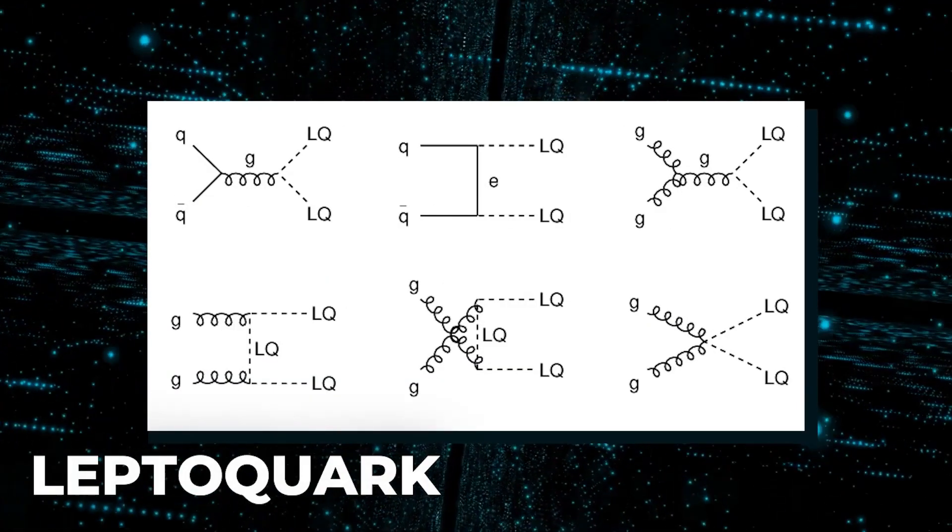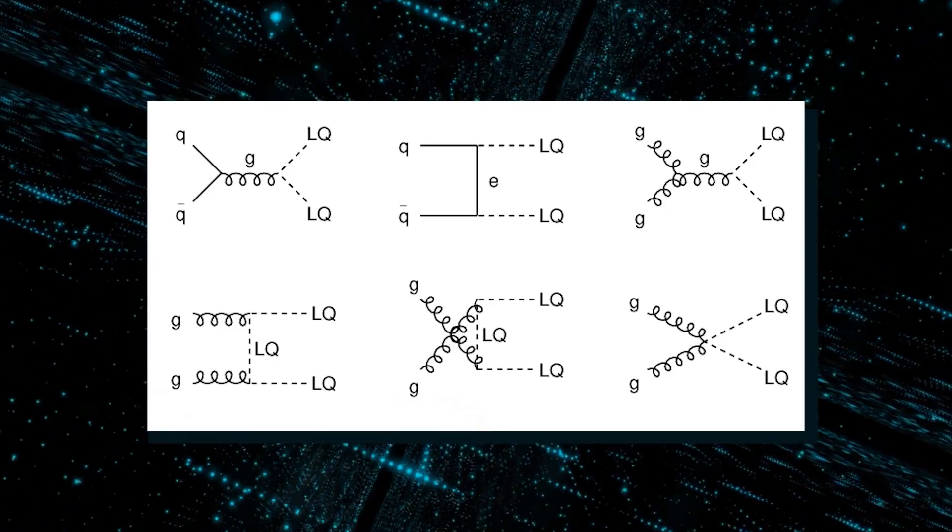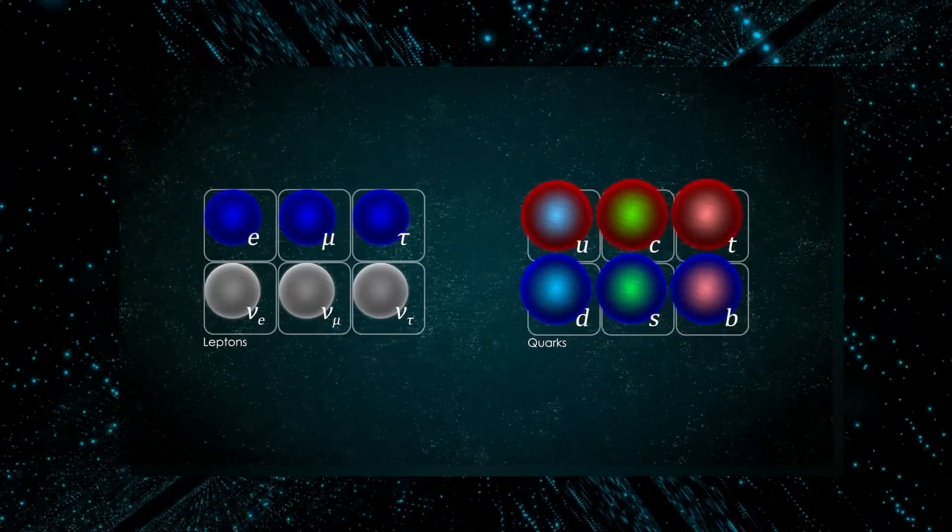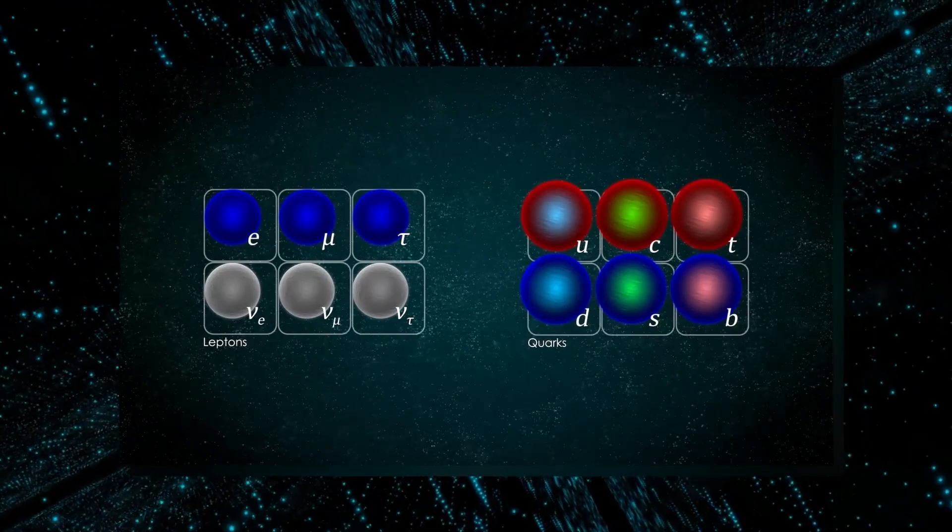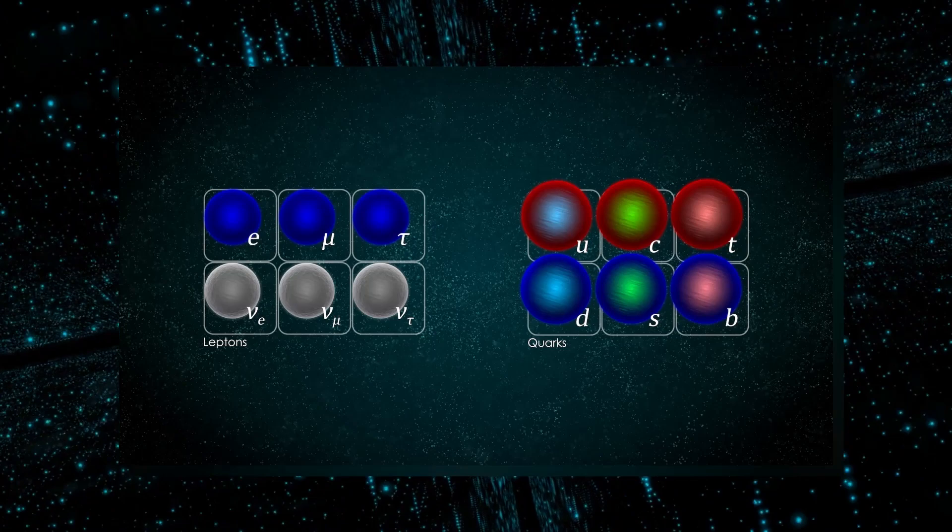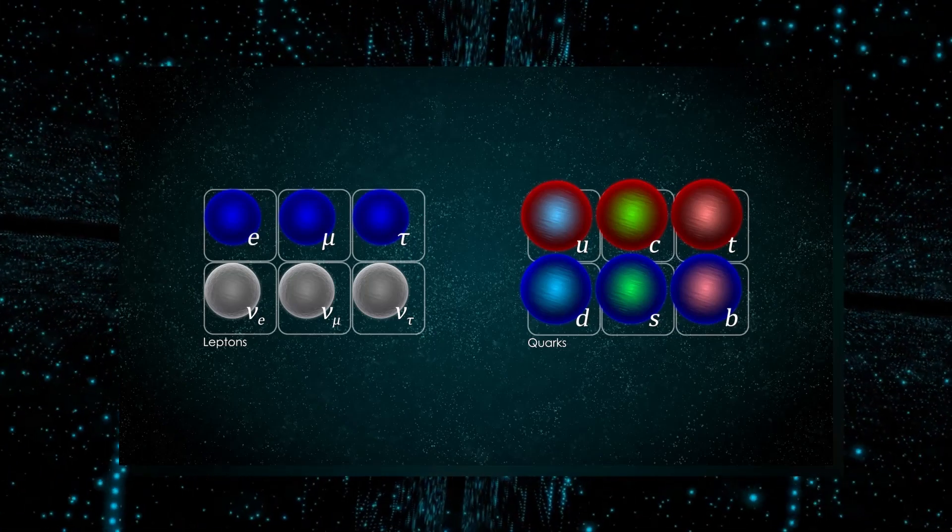Dr. Patel claims that the possibility of a leptoquark, a hypothetical subatomic particle, is one of the most dramatic scenarios if these facts hold up in the future collider run. The difference between the two sorts of particles that make up the material cosmos may be bridged if the particle is genuine. Protons, neutrons, and lighter leptons like electrons, muons, and neutrinos are made of quarks.